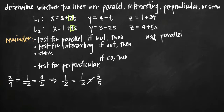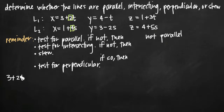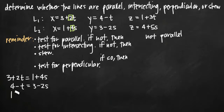Since our lines are not parallel, we move on to test for intersecting. We do this by solving a system of simultaneous equations — if we can solve it, the lines are intersecting; if we can't, they're not. We take each pair of parametric equations and set them equal: 3 plus 2t equals 1 plus 4s (from x), 4 minus t equals 3 minus 2s (from y), and 1 plus 3t equals 4 plus 5s (from z).